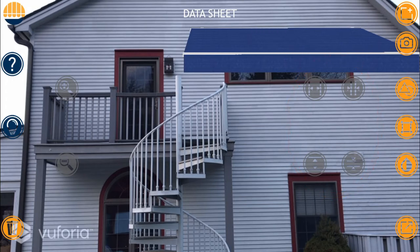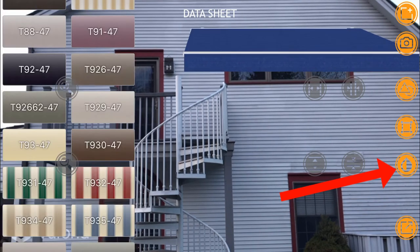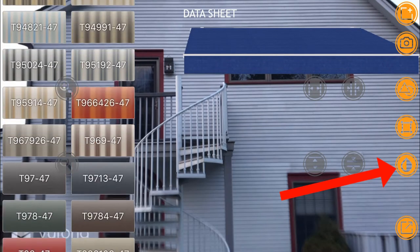Next, and probably most importantly, I can select the colors icon, which will load all 202 of the available TempoTest patterns from our US collection. We can scroll through these and simply select the color we prefer.